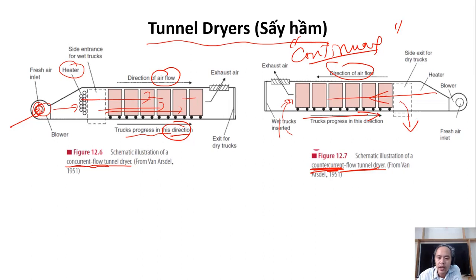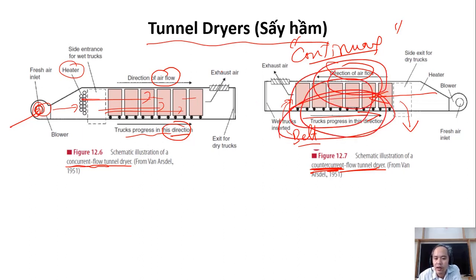In continuous drying, the food can be entered continuously, and when it reaches the other end it becomes dry and is taken out. This can be done on trolleys, or they can make it a belt system where the belt moves around and the product goes out. It can be a large and quite long system.